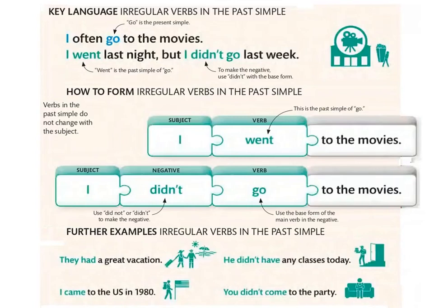مثلا: I often go to the movies — هنا go في الpresent simple، للحاجة اللي ديما تصير. ولكن last night — I went. ما نقولوش I goed — هو irregular verb. Went is the past simple of go.